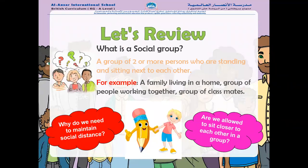Now let's review. How many of you remember what is a social group? A group of two or more people who are standing and sitting next to each other is called a social group. For example, a family living in a home is a social group, a group of people working together is a social group, and a group of classmates in a class are also a social group.